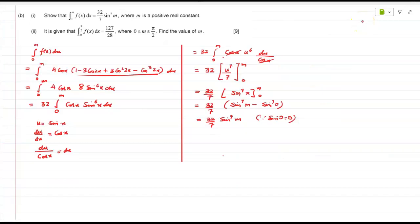So part 2, your integral of m to pi by 2, correct? fx dx, is equal to 127 by 28. But what is the integral of fx we got? 32 over 7. 32 over 7, correct?